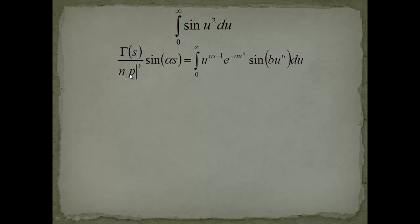Let's first have a look again at our super formula. It's Gamma of S over N multiplied with the magnitude of P to the S sin of alpha S. So I chose sin as because we seem to have a problem with the sinus. And here we have the right hand side.